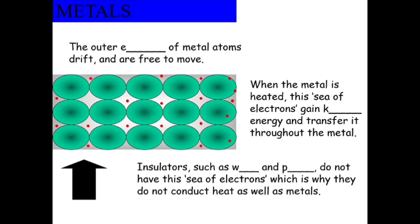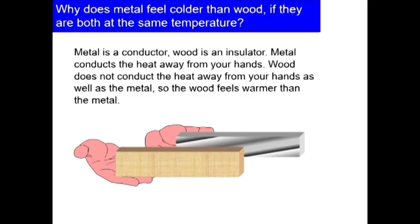In metals, the outer electrons of a metal atom are free to move. When the metal is heated, the sea of electrons gain kinetic energy and transfer throughout the metal. Insulators such as wood and plastic do not have the sea of electrons, which is why they do not conduct heat as well as metals.